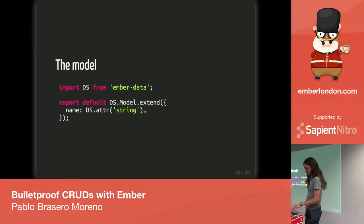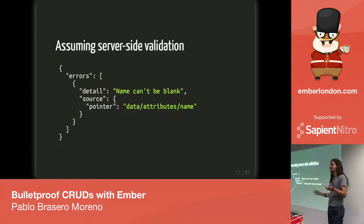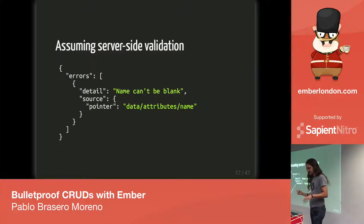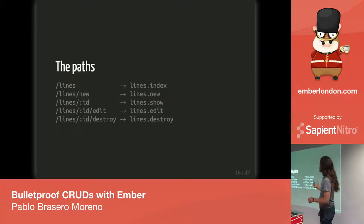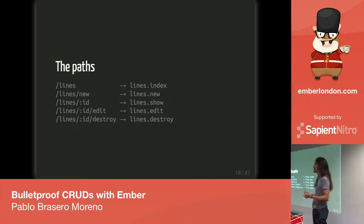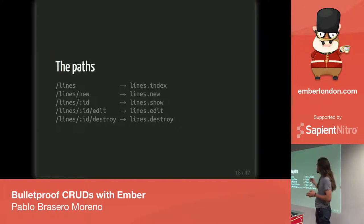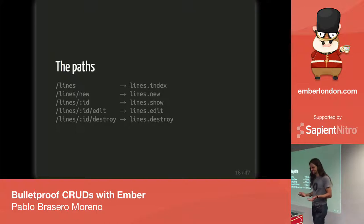I'm doing server-side validation, so I expect the API to handle this for me and return a JSON API error when I'm sending bad data. Starting with actually building the app, one of the first things you have to think about is what paths and URLs it's going to use. Coming from a Ruby on Rails background, I settled on URLs that Rails developers will be familiar with: slash lines to see a list of records, and slash lines slash new to see the form to create new records.